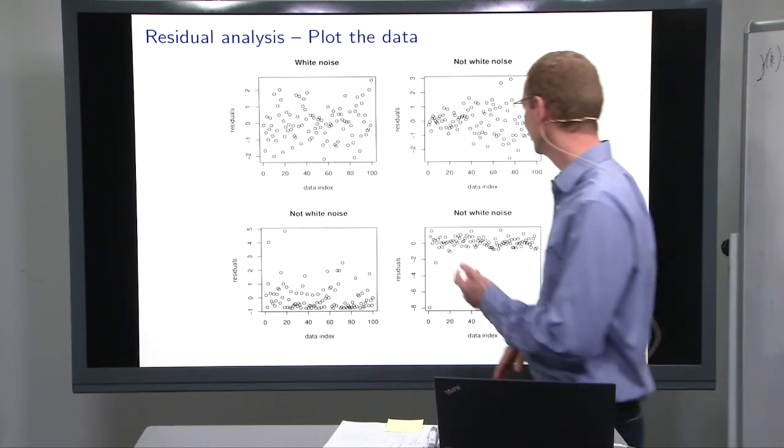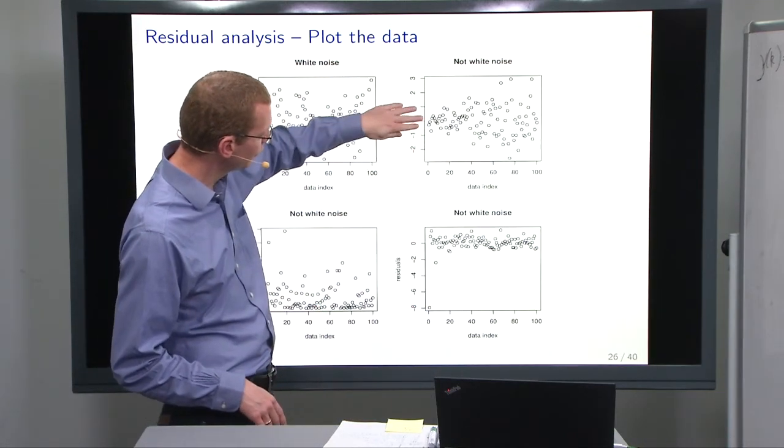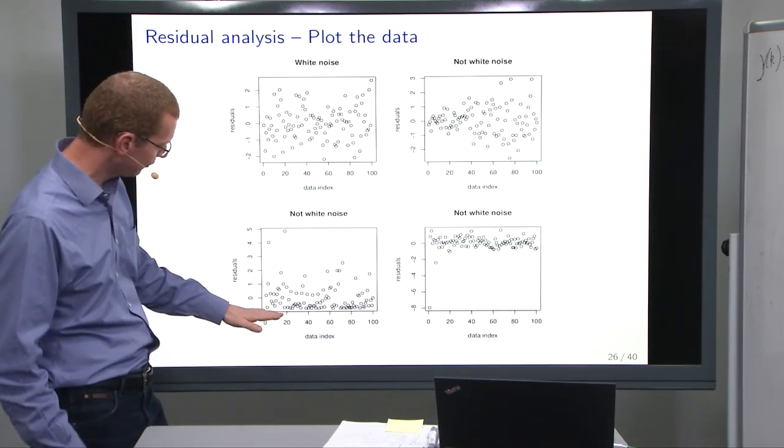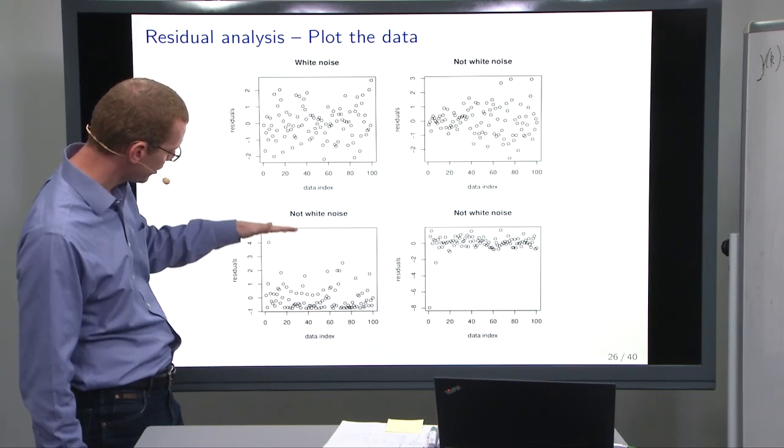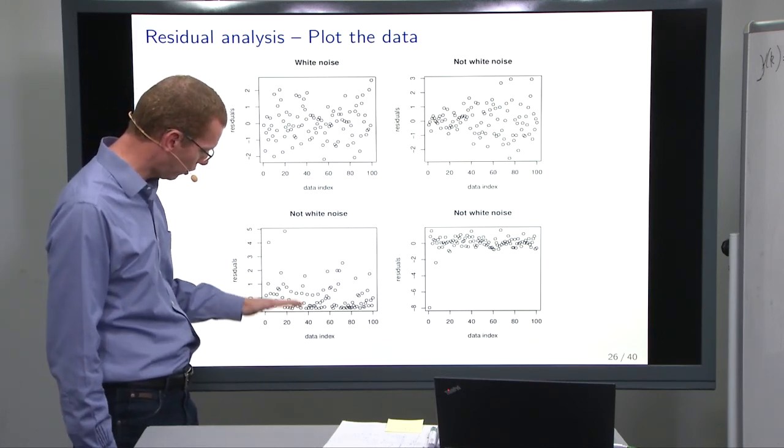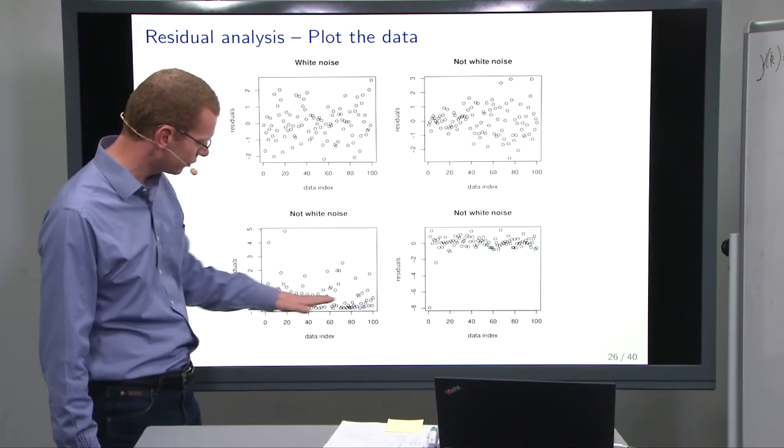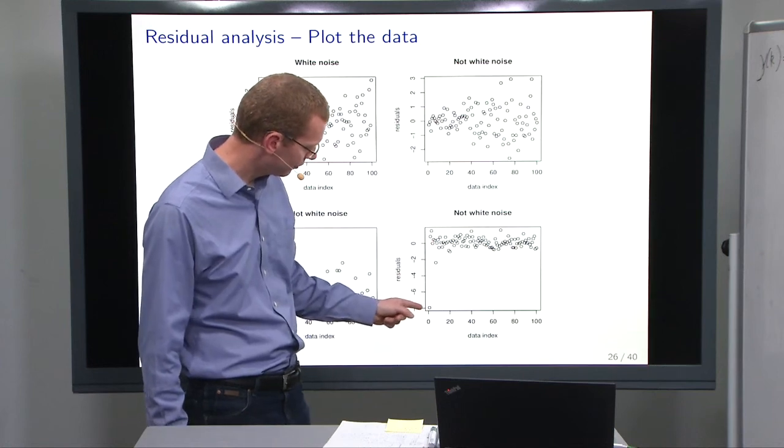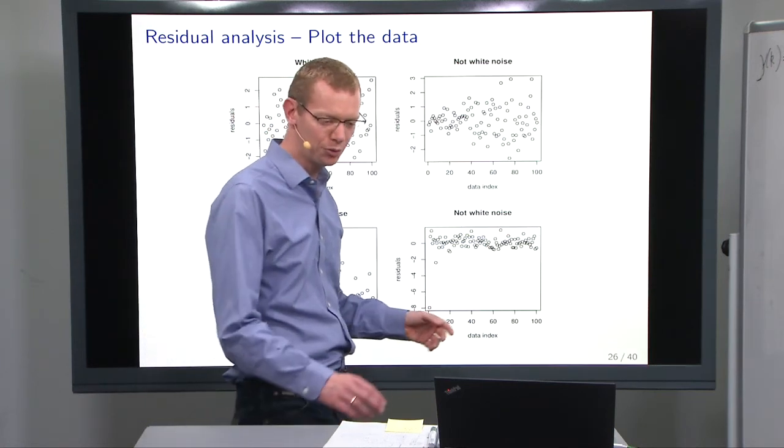The way they are non-white noise is that for this one up here, the variance is increasing over time. Down here, we have something that has a high probability of large positive residuals and small negative residuals, so it's not symmetric. And another thing is you could have some single outliers and the rest be maybe normal.